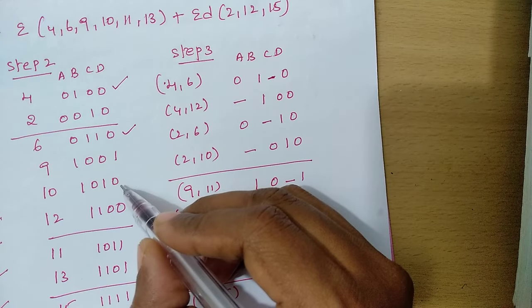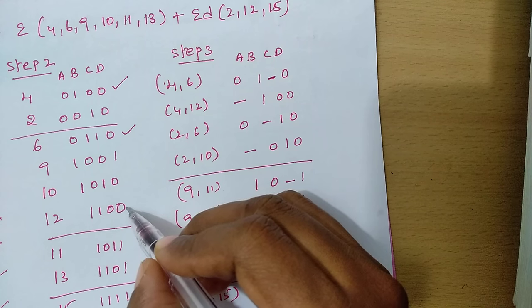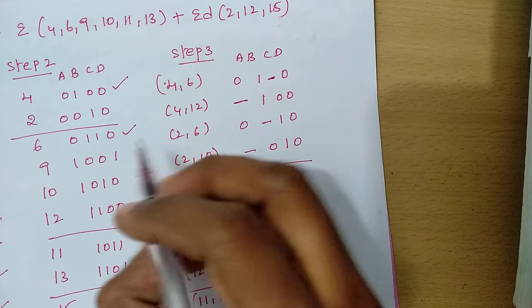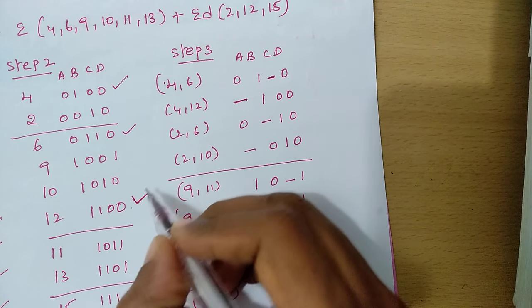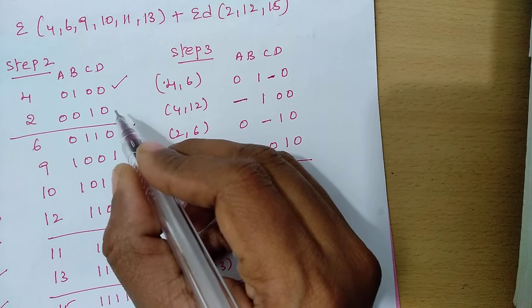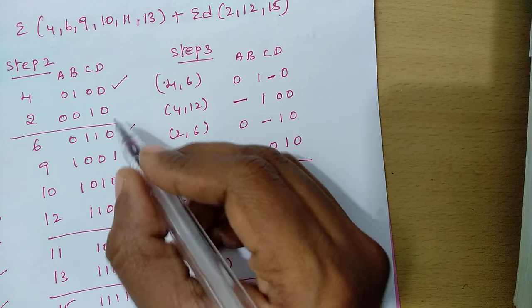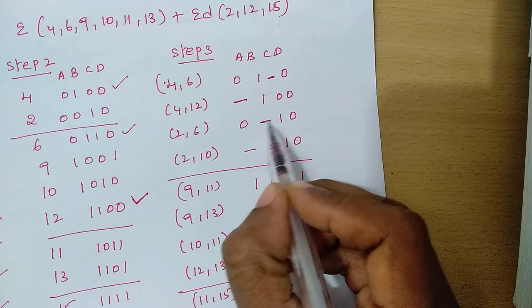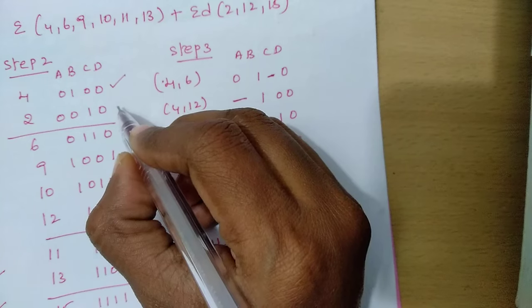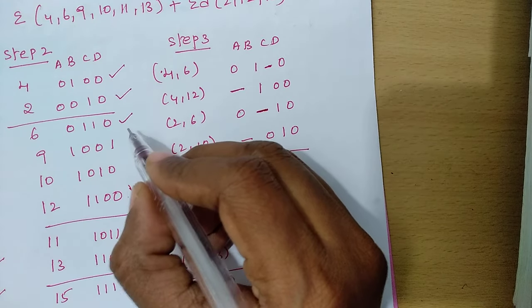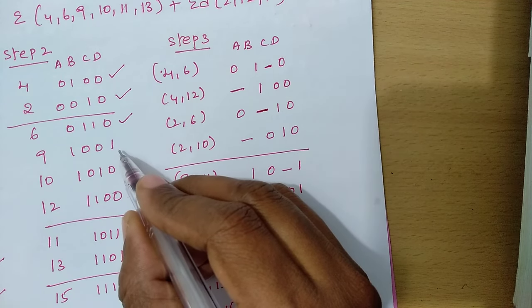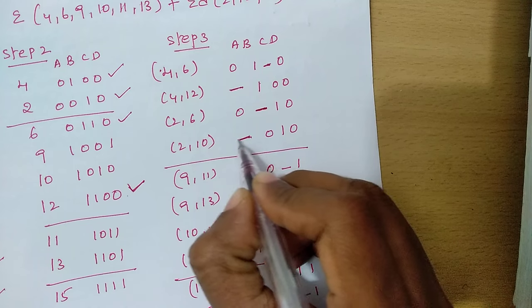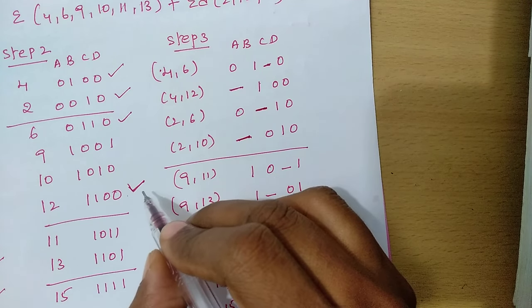Comparing 4 and 10: more than one bit change, don't consider. Comparing 4 and 12: one-bit change at position A, so consider combination 4,12 with a dash at A. Both 4 and 12 are ticked. Next, minterm 2 is compared with 6 (one-bit change at B — consider it), with 9 (more than one bit — don't consider), with 10 (one-bit change at A — consider), and with 12 (more than one bit — don't consider).